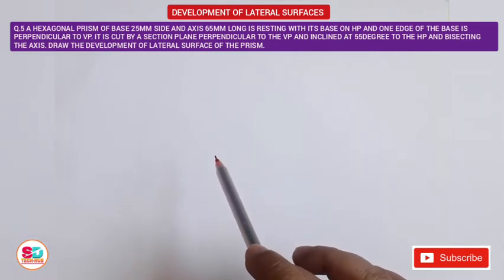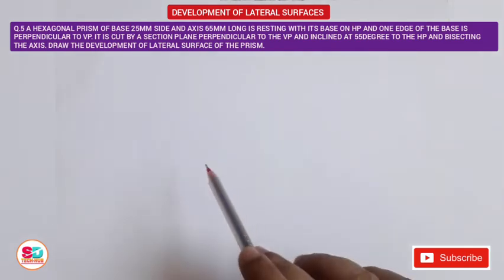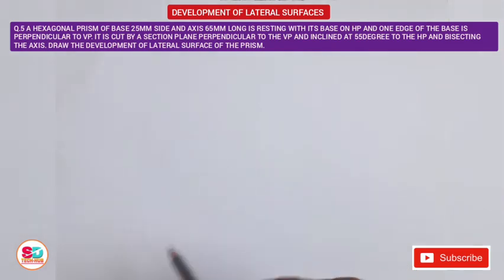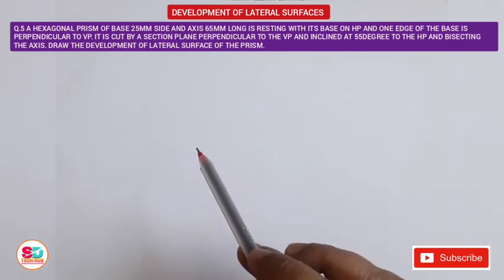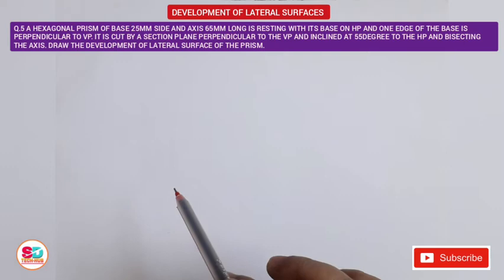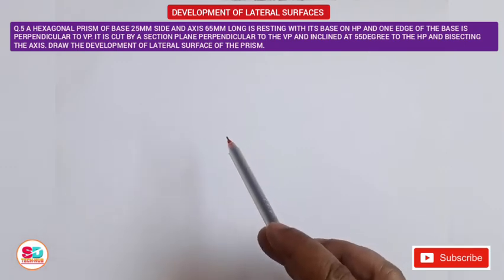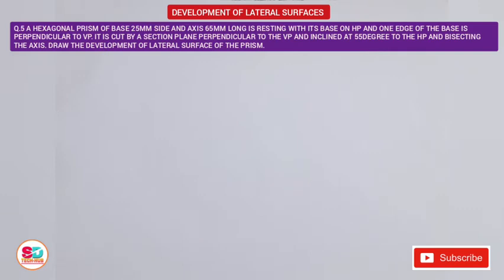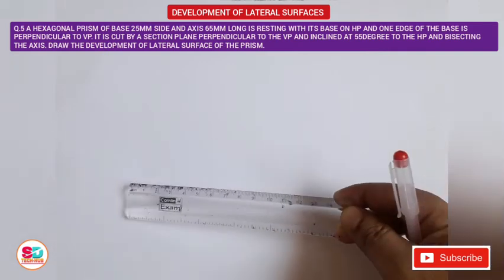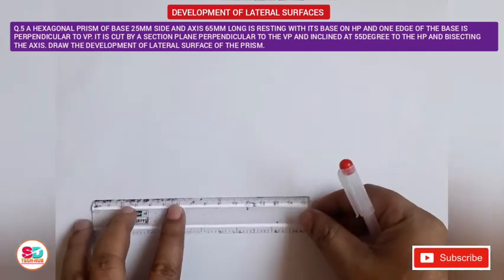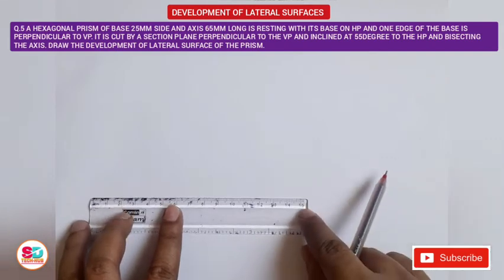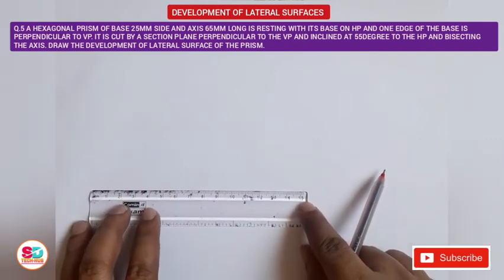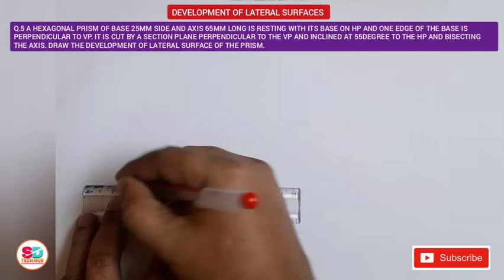The top view shows the hexagonal base with the top face overlapping the bottom face, and the front view shows a rectangle. We will start with the top view because the true shape of the prism is visible there. First, we draw the XY line.